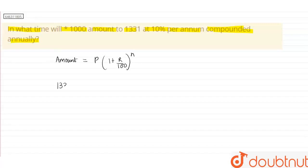Now, here the amount is given as 1,331 and the principal is given as 1,000 and the rate is given as 10% per annum and we have to find the time, meaning the number of years.